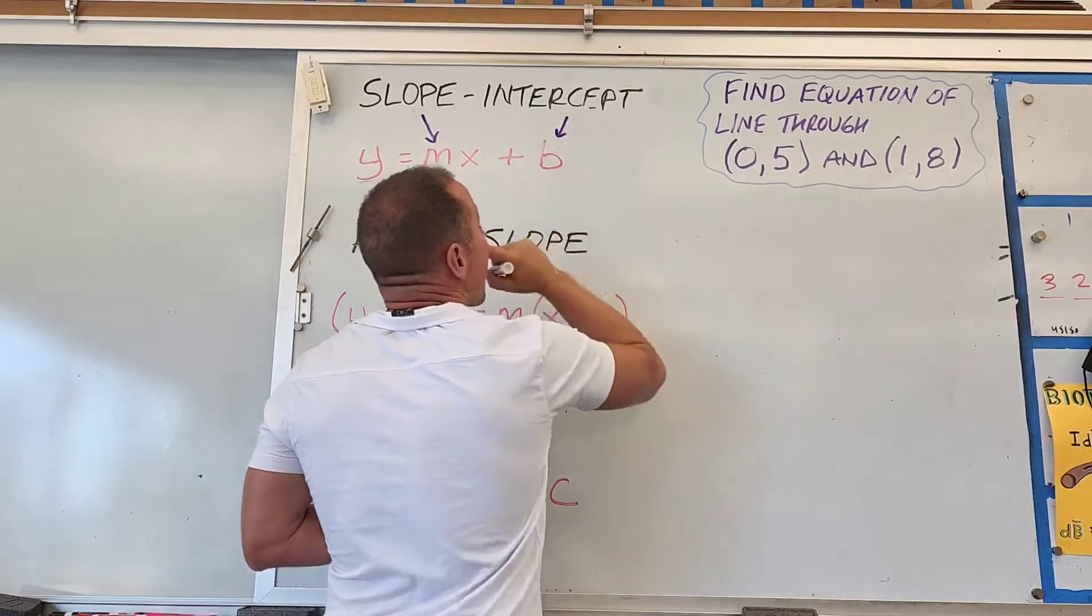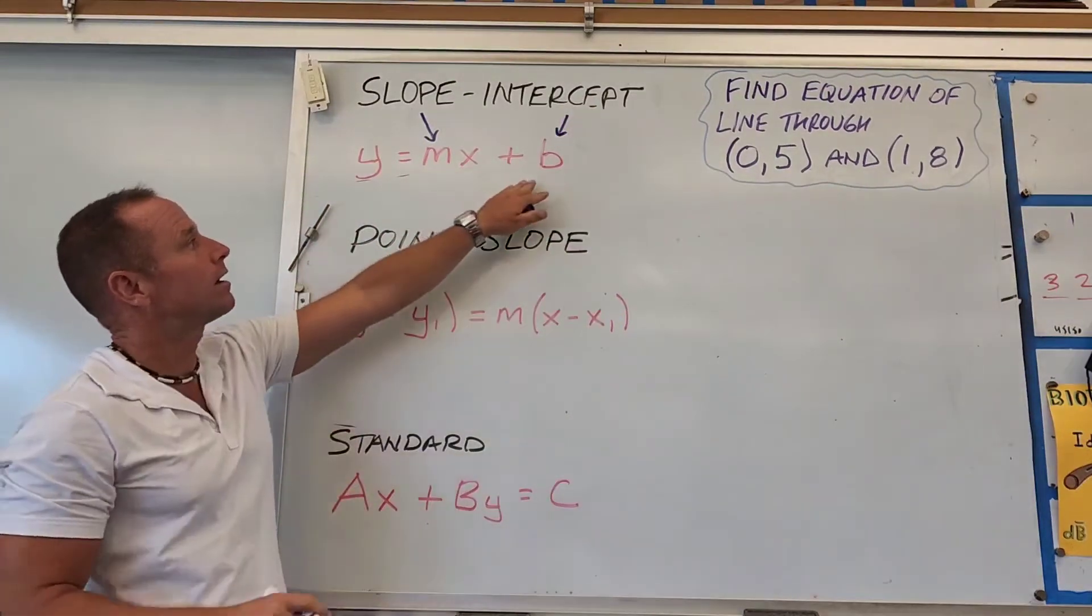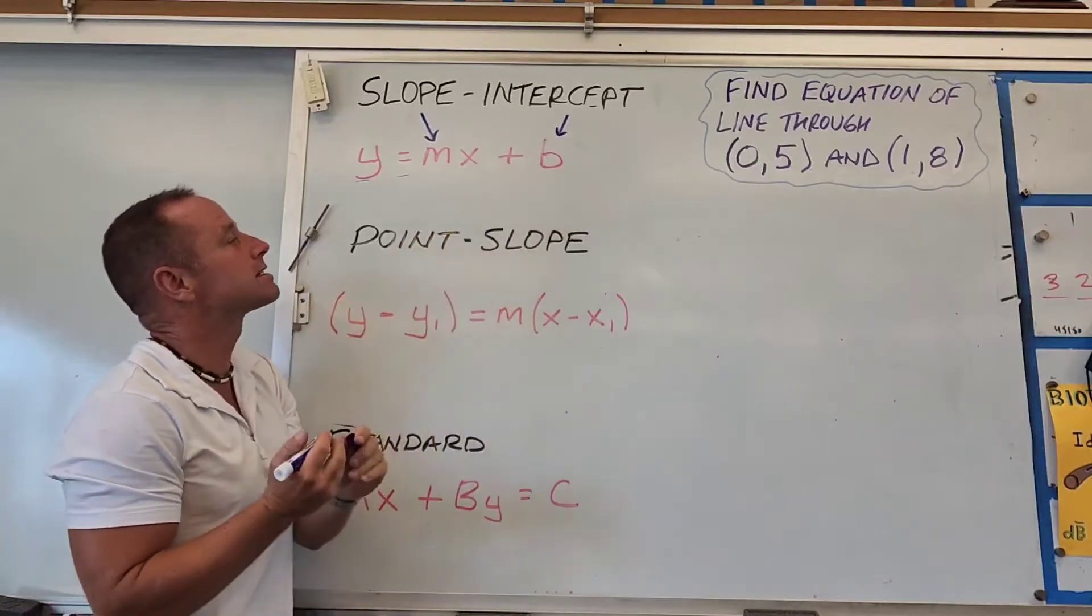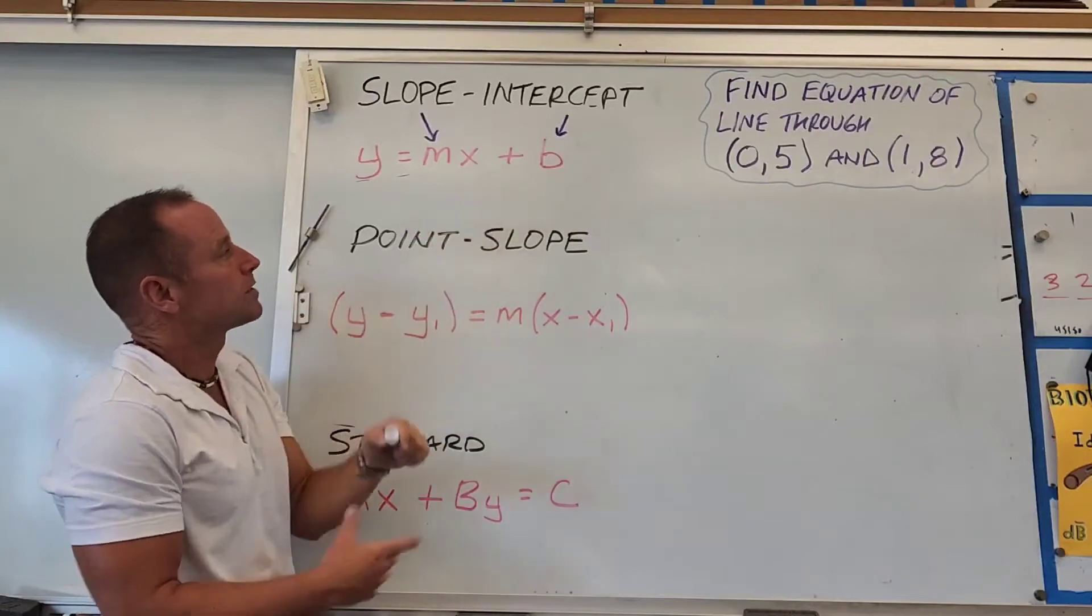and b is the y-intercept, where the line crosses the y-axis. We're going to put it in this form.